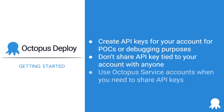And finally, when you need to share an API key or configure a build server integration, use service accounts in Octopus Deploy. For more information on service accounts, please click the link which just appeared in the top right corner. Links to additional resources as well as links to contact support can be found in the description below. Thank you for watching and happy deployments!